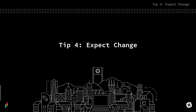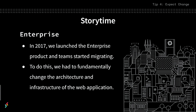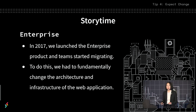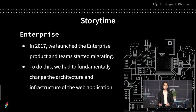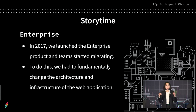My final tip, tip number four, is to expect change. In 2017, we launched the enterprise product and teams started migrating. To launch the enterprise product, we had to fundamentally change the architecture and infrastructure of Slack's web application. This is a really scary thing to do sometimes, and you have to make really tough decisions about how you're going to make sure your product scales. In that process, we decided to change the way that user IDs worked inside of Slack — a change we had to make in order to support the type of product and experience that we wanted our customers to have.